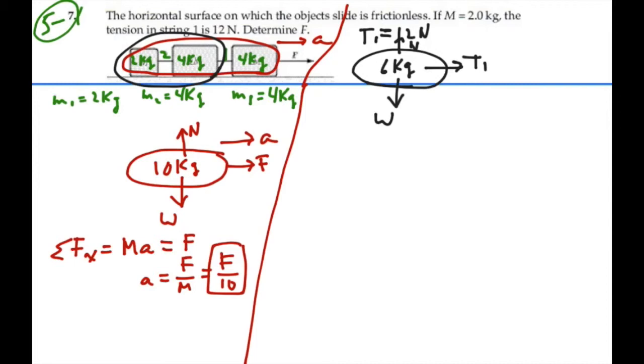But the only force making it go to the right is tension 1. That's the only thing that is connected in the x direction, causing a force and moving this blob to the right. And it moves to the right with some value of acceleration, which we just determined to be F divided by 10.